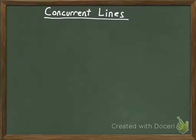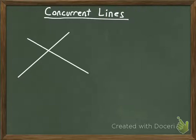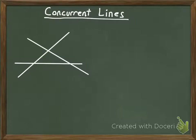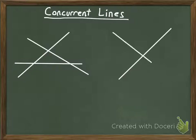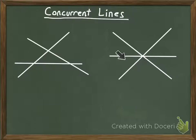You know that any time two lines intersect, they intersect at a point. But what are the different ways that three or more lines can intersect? One possibility is that they just intersect at three different points — you could have that kind of situation. Another scenario is that three lines all intersect at exactly the same point. Whenever you have three or more lines that intersect at a single point, that set of lines is referred to as concurrent lines.